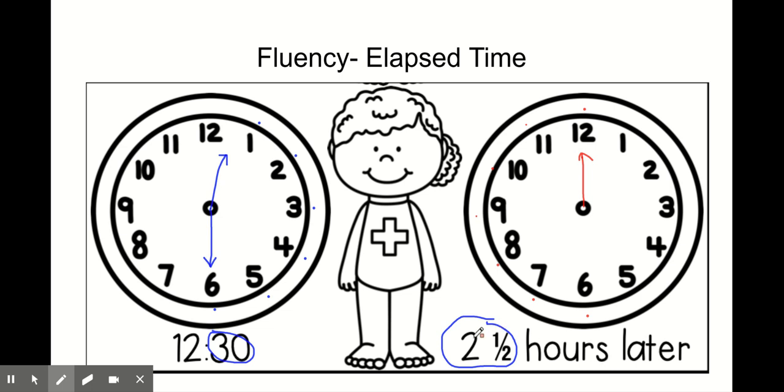And then two full hours. If it's 12:30, I'm moving my hour hands from 12, one full hour to two full hours. But remember, we added that half. So it actually goes all the way to the 3.